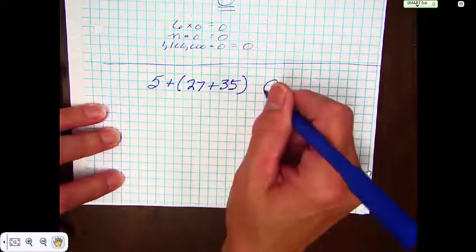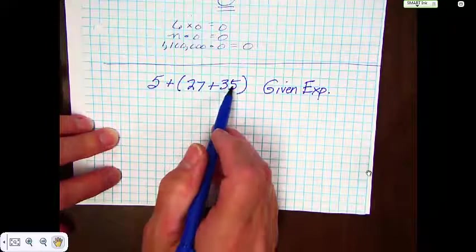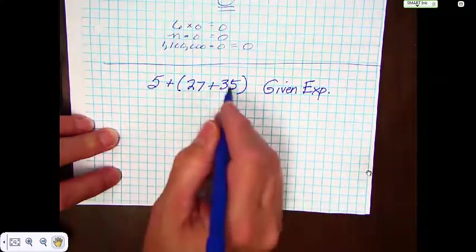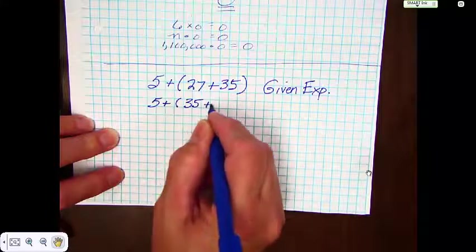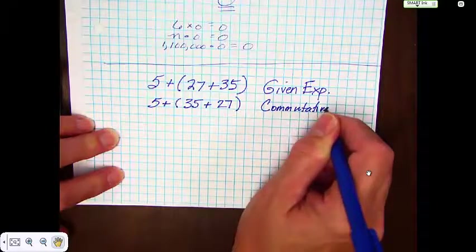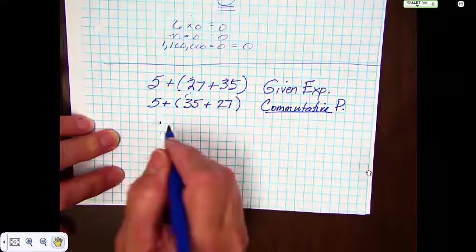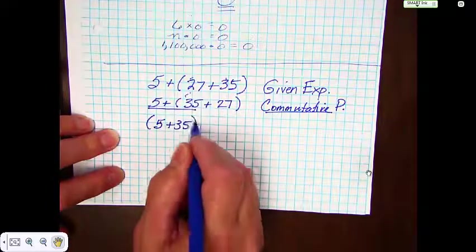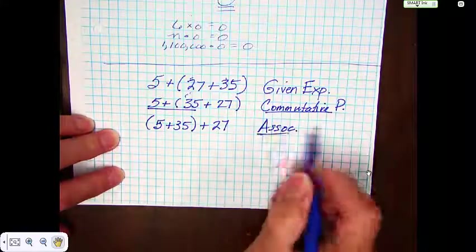The first step is just the given expression. I don't like to try to add 27 and 35, so I would like the 35 to add on to the 5, because 35 plus 5 is 40. So I'm going to change the order within these parentheses. What property allows us to change the order? It is the commutative property — that's the reason for this step. Now I want to change the grouping to get the 5 and the 35 together, so I'm going to write 5 plus 35 plus 27. What property tells me I can do that? That's right — it is the associative property. I can re-associate the numbers and change where they are grouped together.